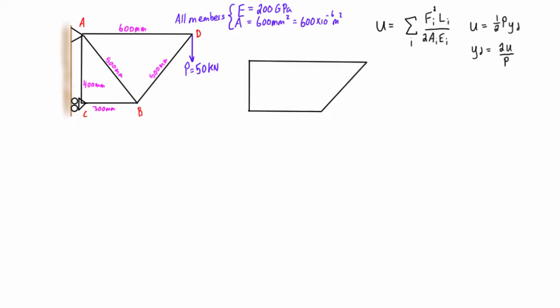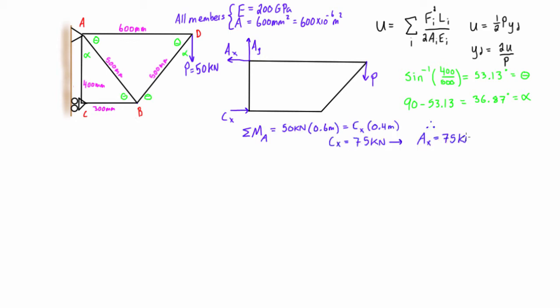So let's go and draw a free body diagram for the entire structure to solve for the reactions at A and C. We're going to find that CX is 75 kilonewtons facing to the right, AX is 75 kilonewtons to the left, and AY is just equal to P, it's 50 kilonewtons pointing in the upward direction.